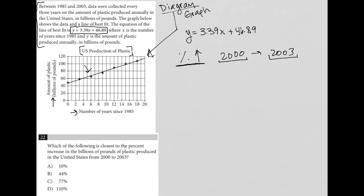The year 2000 would be 15 years since 1985, 1985 plus 15 gives us the year 2000. So 15 years is here, between 14 and 16.